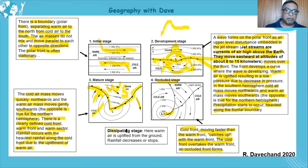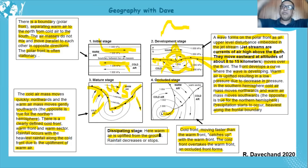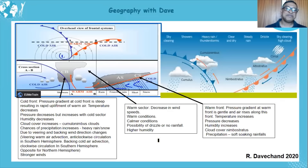The last stage is the dissipating stage. All the warm air is uplifted from the ground, so only cold air stays at the surface. Pressure increases, there's no low pressure anymore, and the cyclone dissipates. Rainfall ceases because there's no more warm air rising and the cyclone is gone.